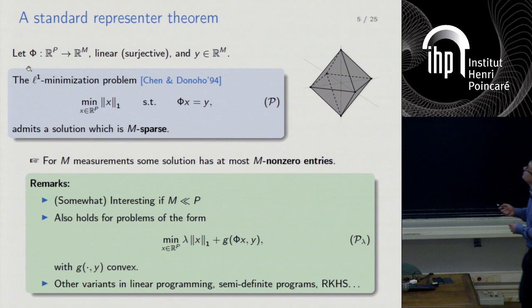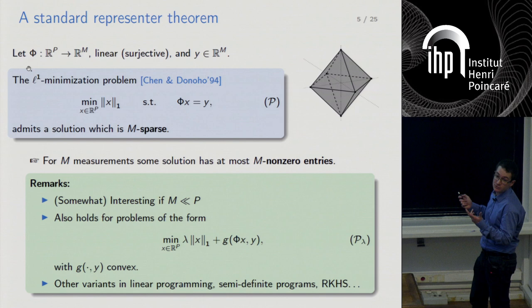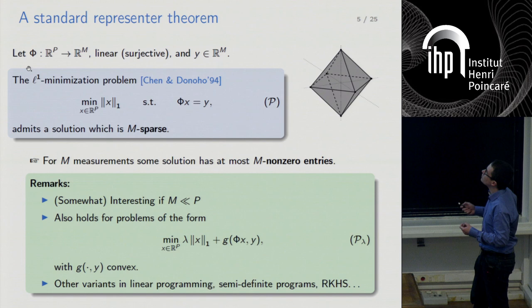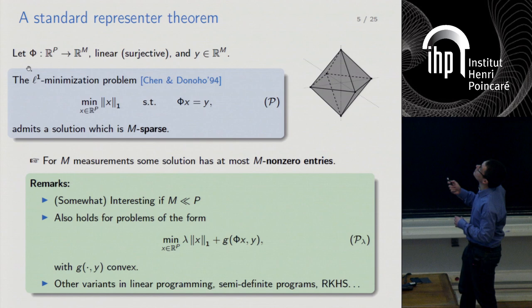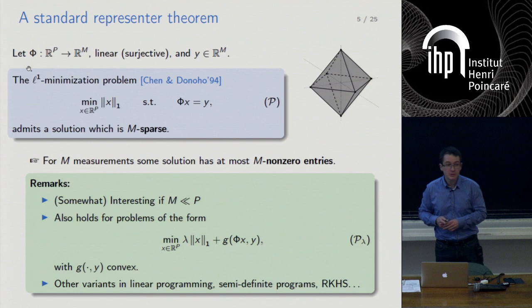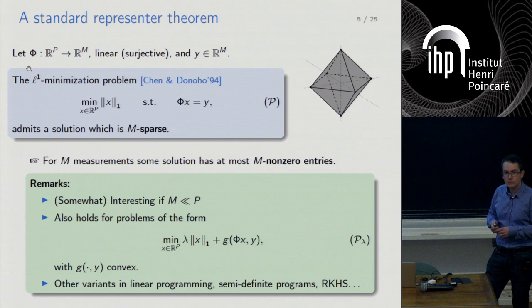This also holds for more general functionals — for instance if you penalize the constraint with a quadratic L2 norm. The reason is that you can choose a solution of P_lambda, fix the value of phi(x), and then look at the constrained minimization problem for that value. Any solution of this problem will also be a solution of the original. This representation principle is quite general and appears in linear programming, semi-definite programming, and the theory of reproducing kernel Hilbert spaces.